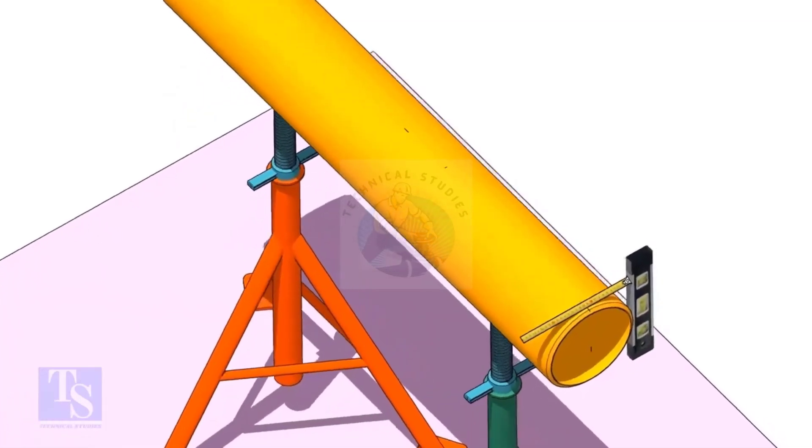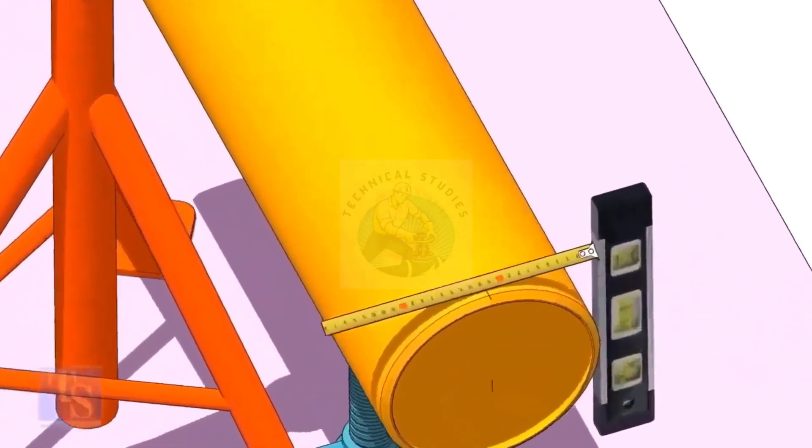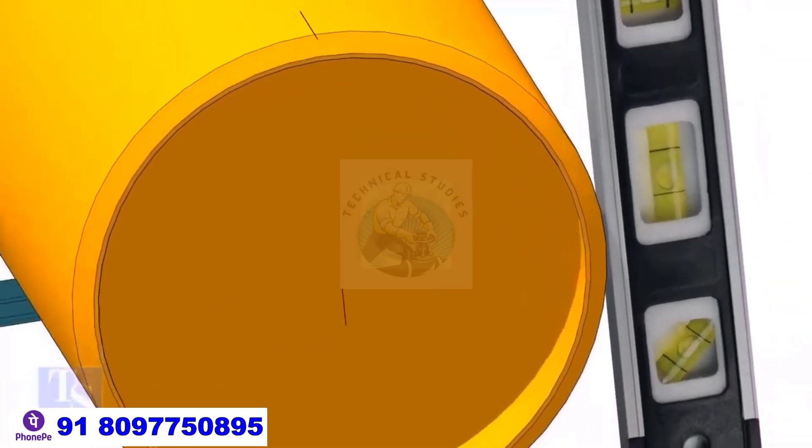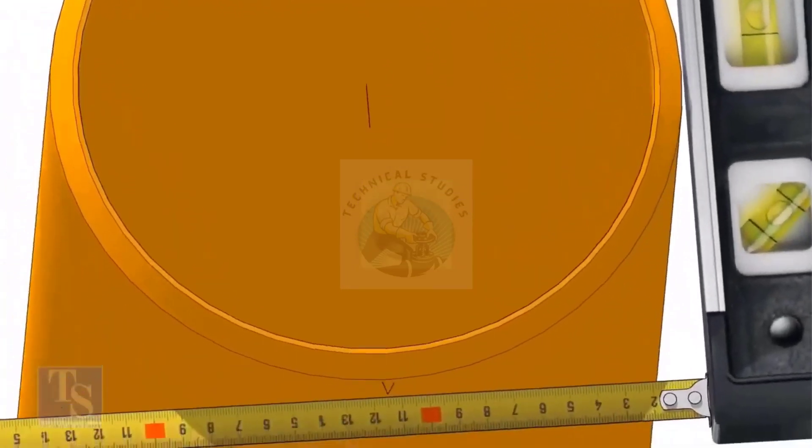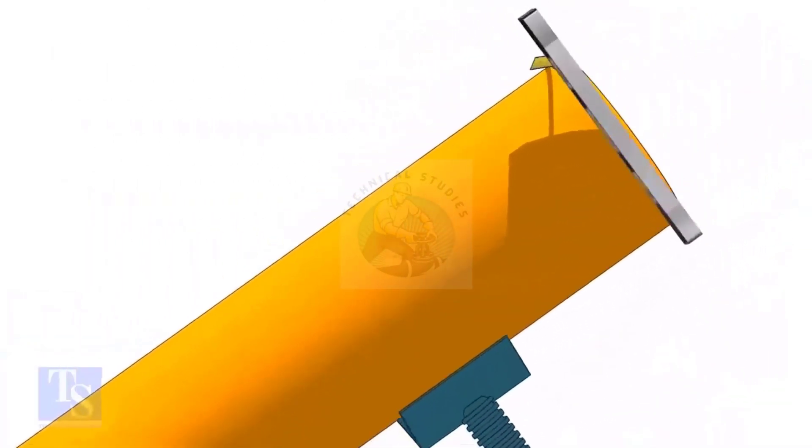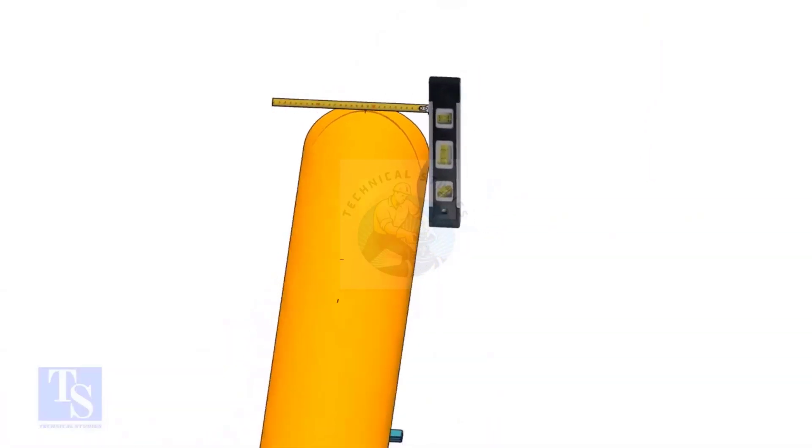Mark the center line of the header on the top and the bottom. Hold a level bottle firmly and vertical at the side of the pipe as shown, mark half OD at the top and the bottom side of the pipe. Cross check the dimension from the opposite side to ensure the marking is correct.